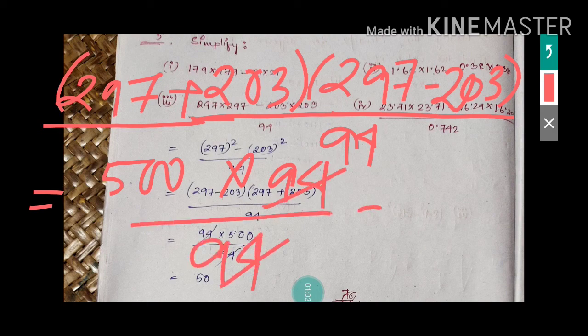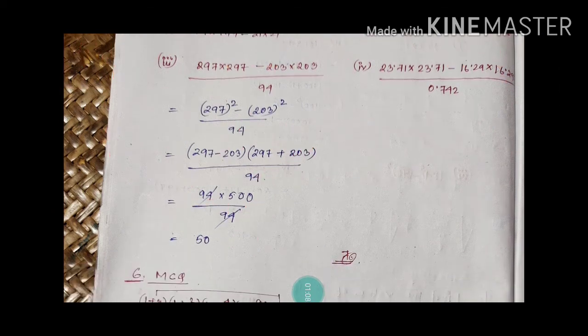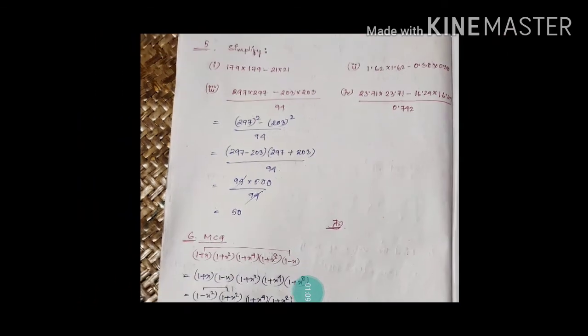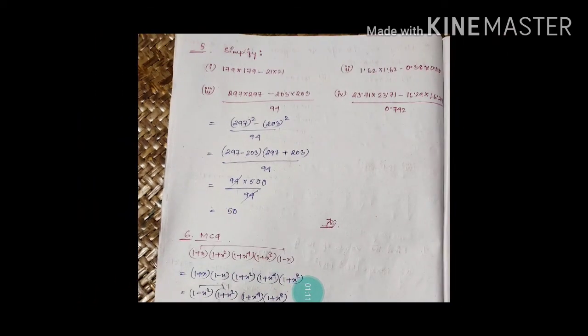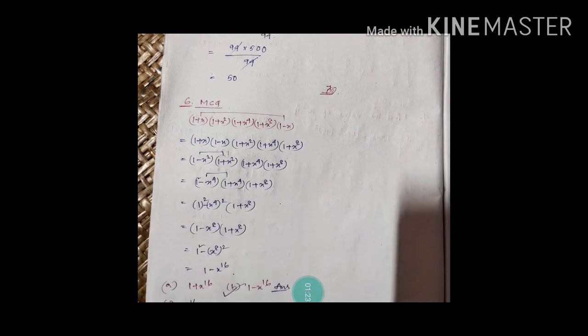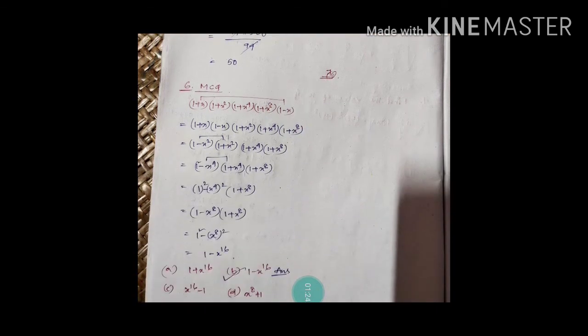The answer is only 500. See how easy it is! Similarly for the other numbers — by observing the terms you have to think which identity it will match, then apply that identity and you will easily get the answer. Now see question number six.